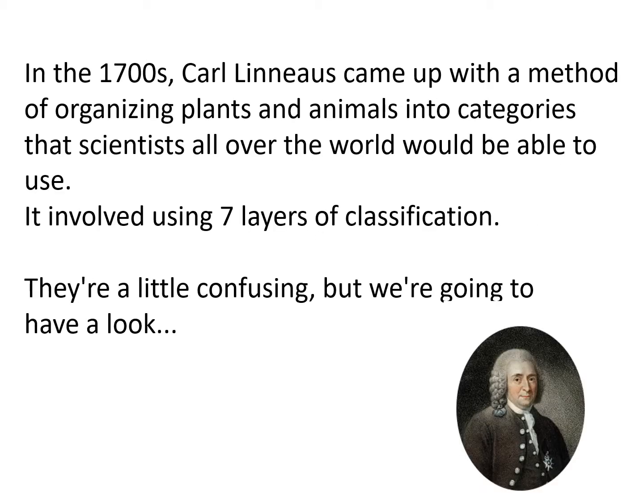So in the 1700s, Carl Linnaeus came up with a method of organising plants and animals into categories that scientists all over the world would be able to use. It involved using seven layers of classification. They look a little bit confusing, but we're going to talk through them together and then you're going to have a go at doing something slightly different, so don't panic.